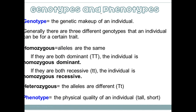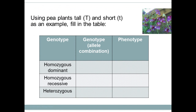To recap: genotype is the genetic makeup. You can be homozygous dominant — both alleles the same capital letters; homozygous recessive — both alleles the same lowercase letters; or heterozygous — alleles are different, one capital and one lowercase letter.